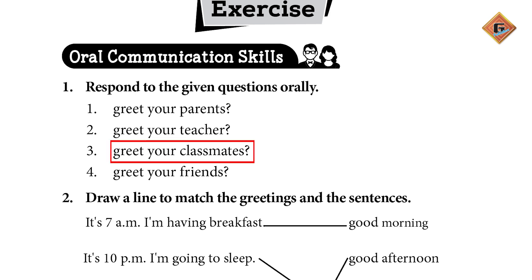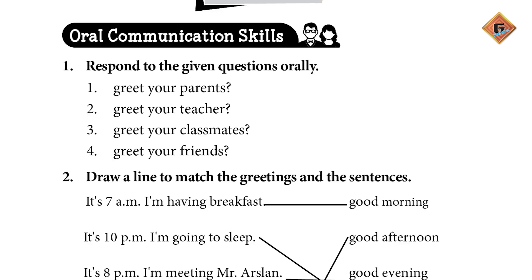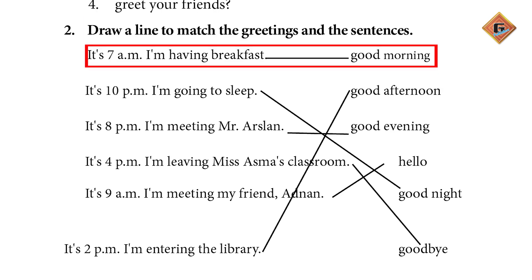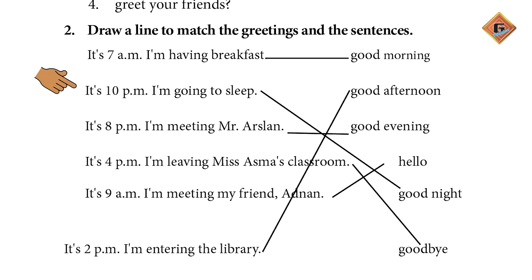Greet your parents, greet your teacher, greet your classmates, and greet your friends. Draw a line to match the greeting and the time of greeting. It's 7 a.m. — I am having breakfast — Good morning. It's 10 p.m. — I am going to sleep — Good night.